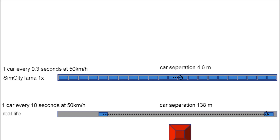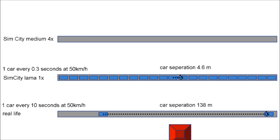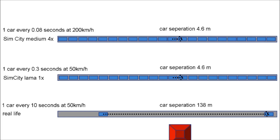By the way, if you change to the medium or cheetah speed setting, nothing changes. The simulation not only compresses time 4-fold for the medium setting — it also increases the speed of the physics engine, meaning the car speeds, by 4 to compensate. The cars appear to move at 200 km/h to the player, but inside the simulation they're still driving at 50 km/h since time is running 4 times faster. The important thing is: the separation stays the same.